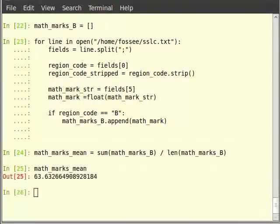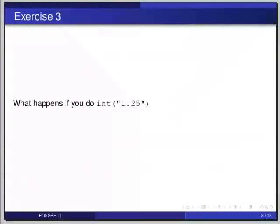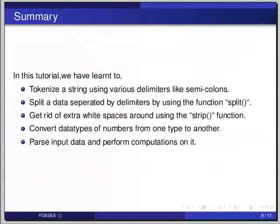This is how we split and read such a huge data and perform computations on it. This brings us to the end of the tutorial. In this tutorial we have learnt to tokenize a string using various delimiters like semicolon, split the data separated by delimiters using the function split, get rid of extra white spaces using the strip function, convert data types of numbers from one type to another, and parse input data and perform computations on it.